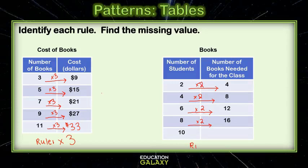The rule is multiply by 2. So, if I want to figure out the 10, I just multiply it by 2. And, 10 times 2 is 20.